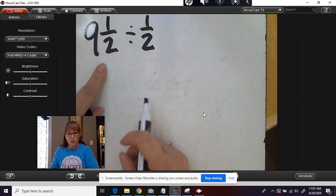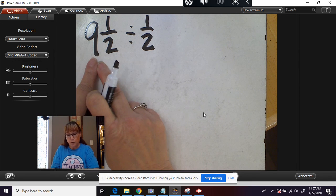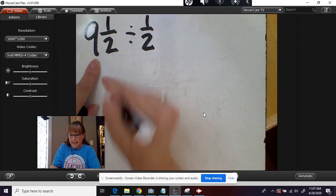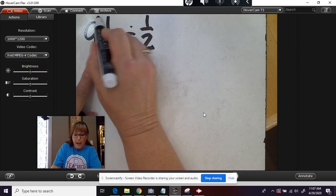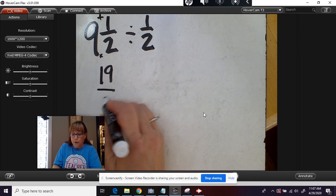We have to change this to improper. So first thing we do is we multiply two times nine. So two times nine is 18. Then you add your numerator. That's 19. So we have 19 over two.